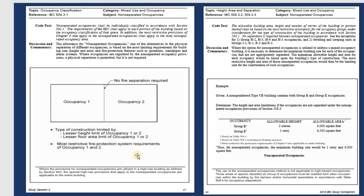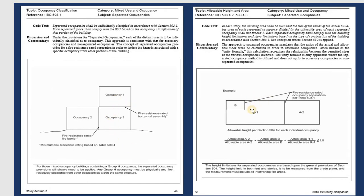Even within the same occupancy type, there can be different sub-classifications. Another example: Group A2 (Assembly), R1 (Residential), and B (Business) in the same building — between Business and R1 you need fire resistance, and between Assembly and Residential you need fire separation because they are on different floors or roofs.